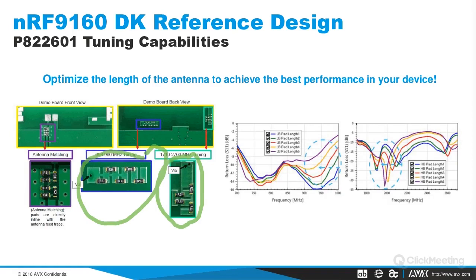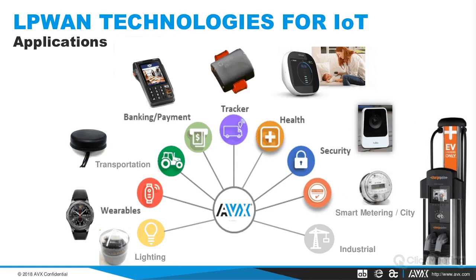Not all applications have the same device size. There are examples with AVX antennas from lighting to small trackers, smart metering, and all with different sizes and different requirements. This is why the development kit is a good starting point, but cannot be used directly for all applications. Before looking at different antenna types, we need to go through some important design considerations.